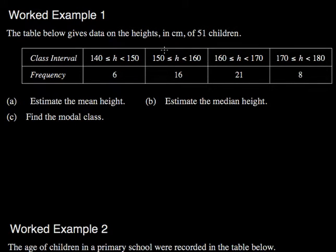These are called class intervals, because we don't know exactly what the heights are, but they lie within this window or interval. So if someone were to be 146 cm tall, they would lie in this. If they were 172, they would lie in this.